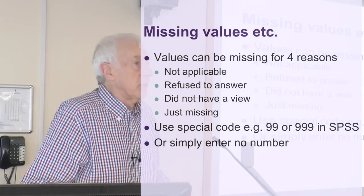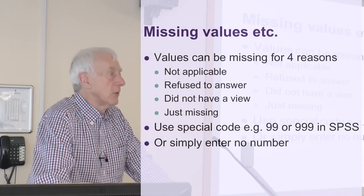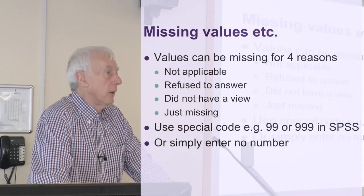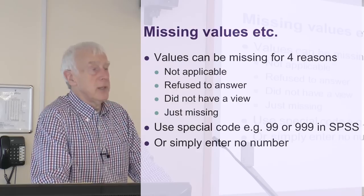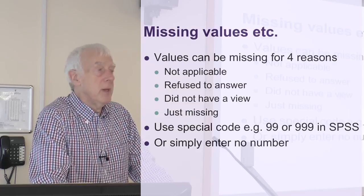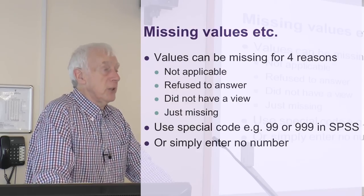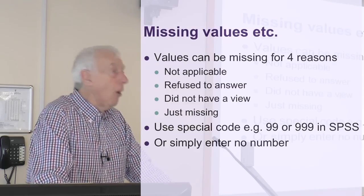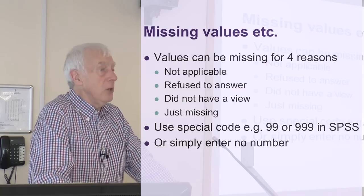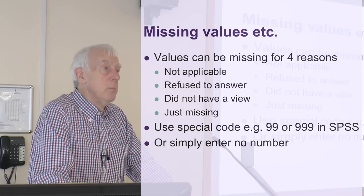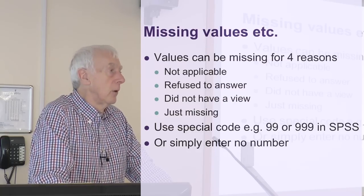One of the problems with this process of converting questionnaires into numbers is that it involves you, the researcher or someone helping you, doing things. Whenever humans get involved, mistakes happen. Things go wrong.